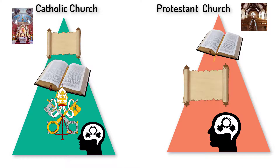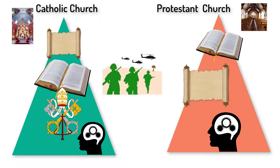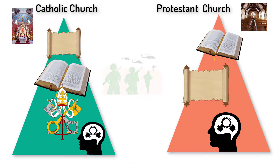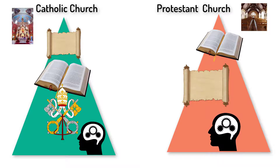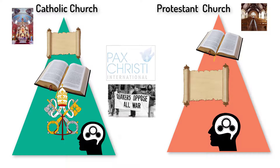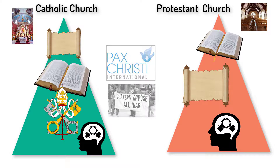The Catholic Church has reasoned that sometimes a just war is necessary, although it generally adheres to the preservation of life. The Protestant Church also uses reason alongside the Bible to deal with moral dilemmas — reason enables a person to make sense of the Bible. Non-conformist Protestants such as the Quakers and Pax Christi are pacifist because they interpret the Bible differently.